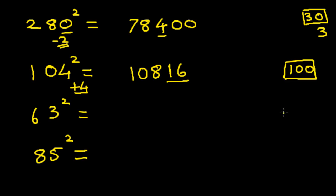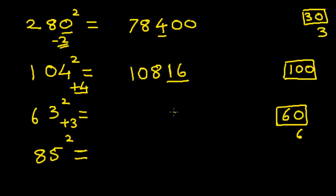Next we take 63. Since the number is closer to 60, we take 60 as a base, with a multiplying factor of 6. Subtract: 63 minus 60 is plus 3. Find the square of 3 — we get 9. Then 63 plus 3 is 66, and 66 multiplied by 6 gives you 396. The answer is 3969.